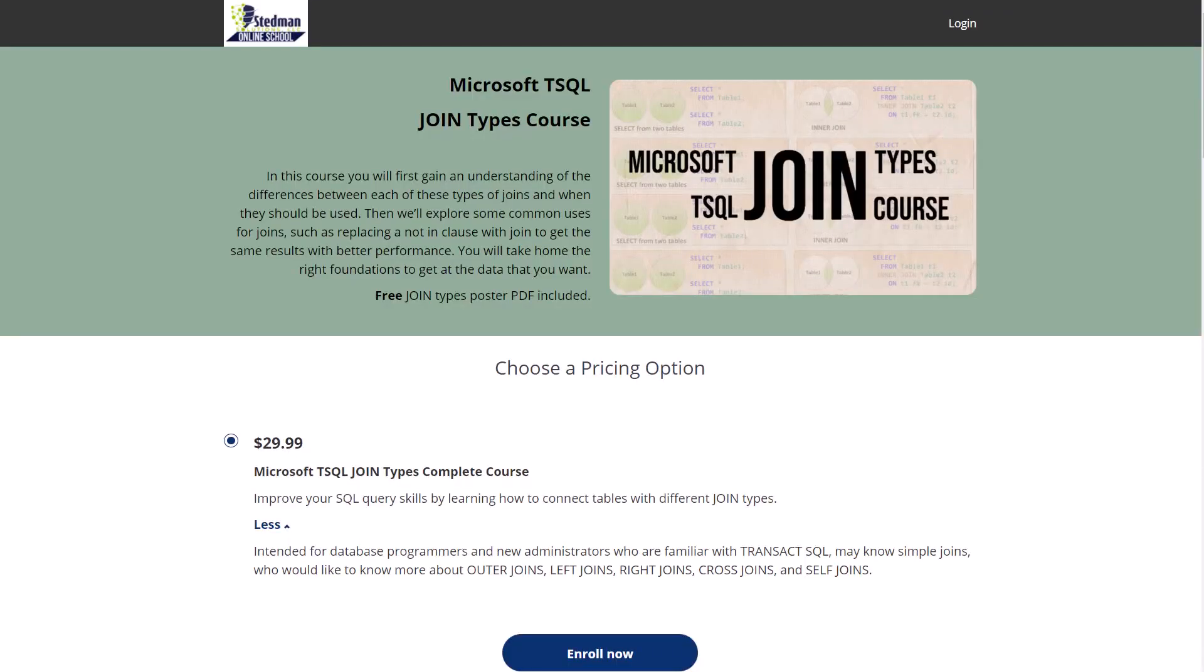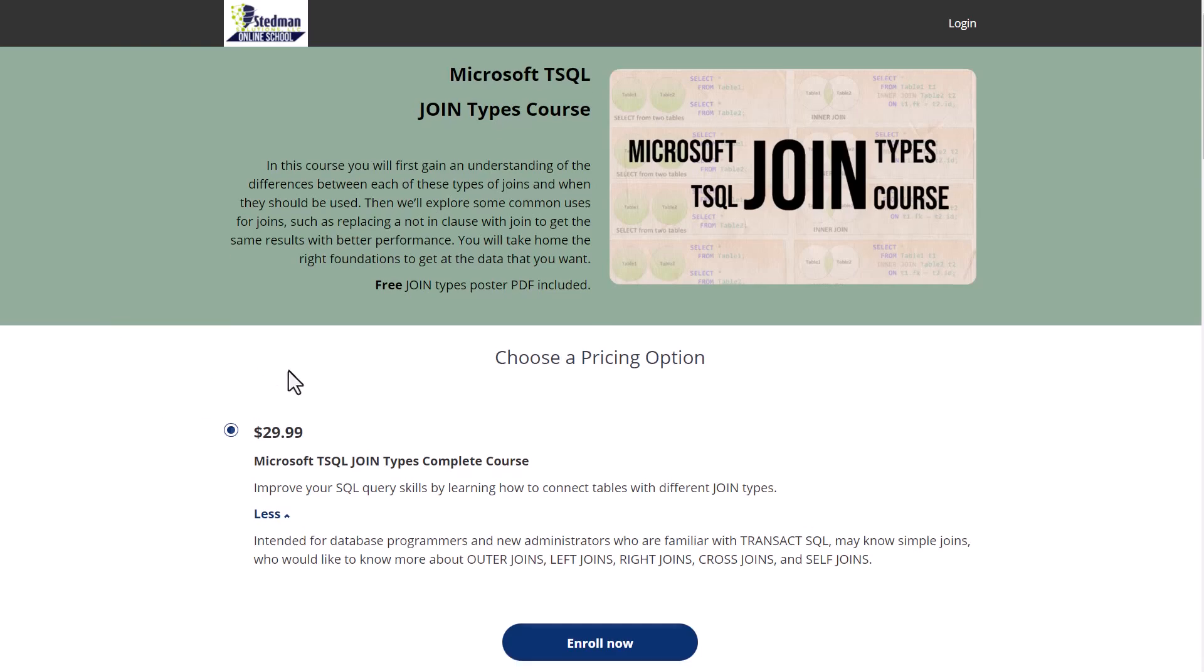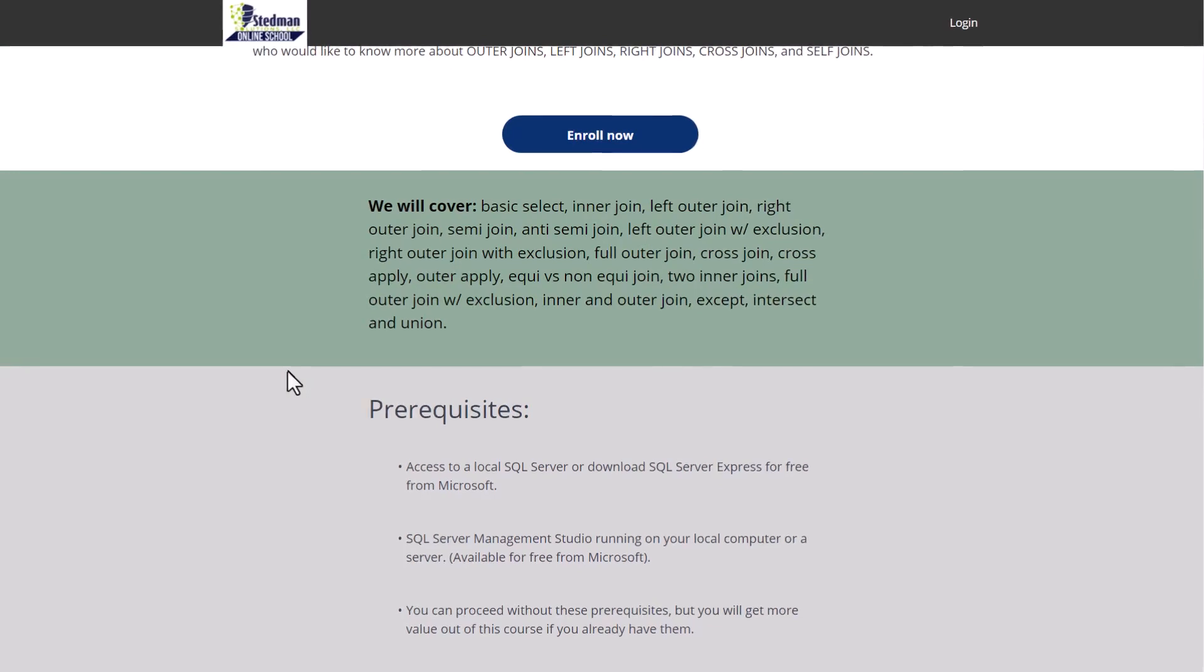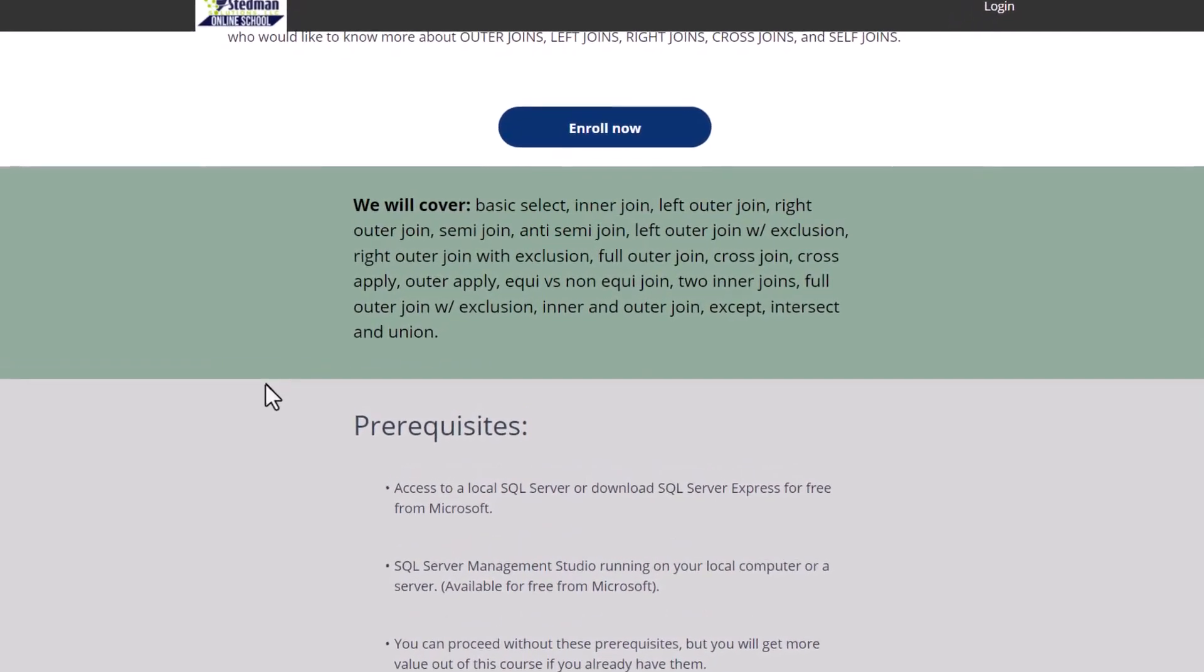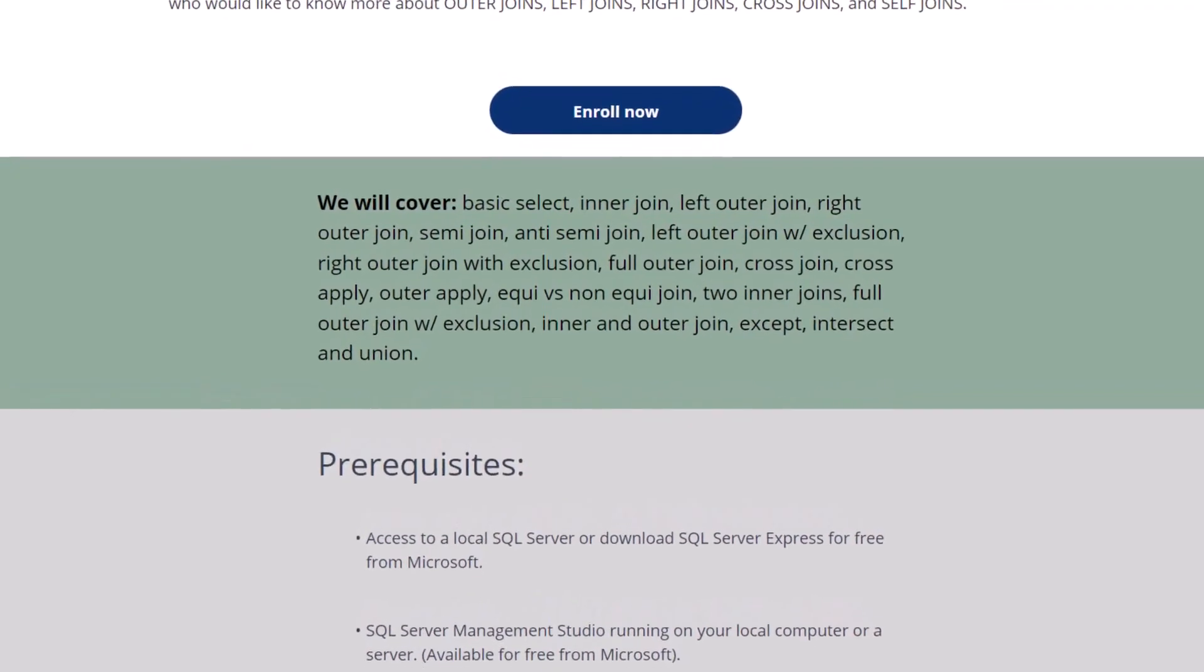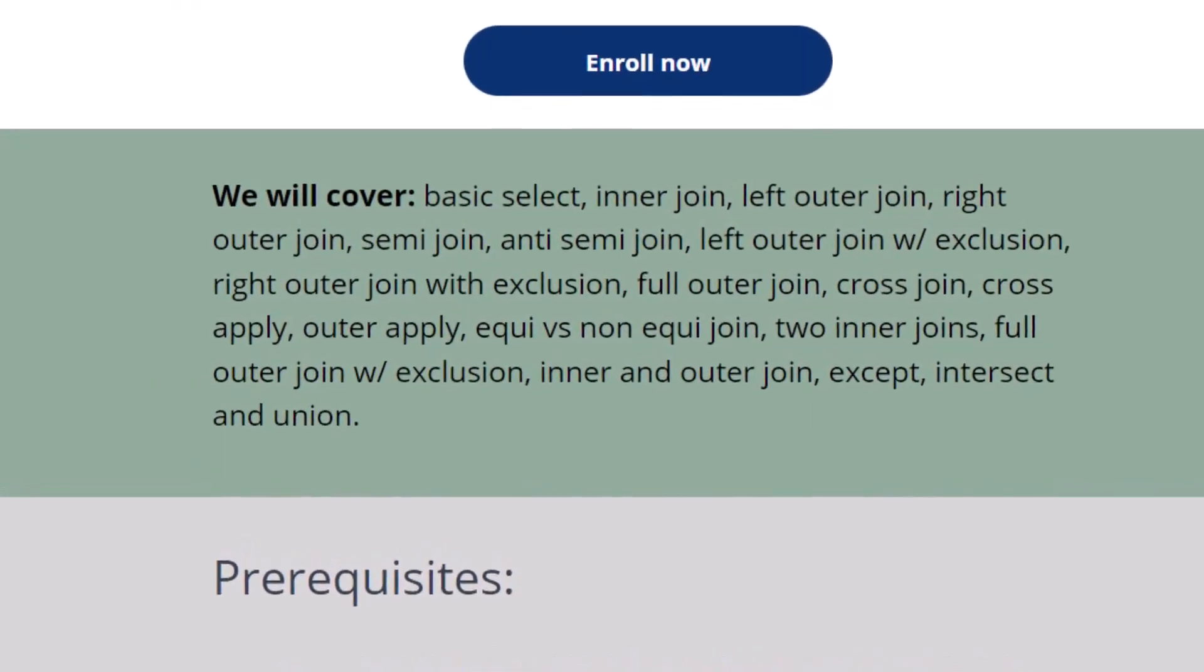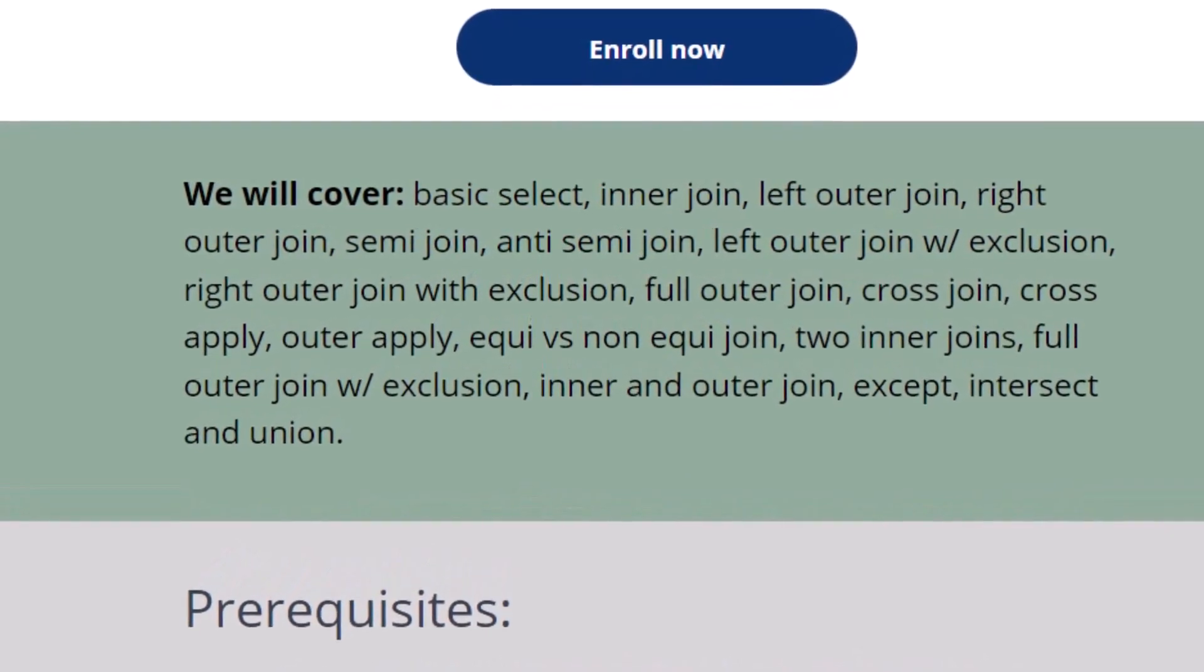Hi, this is Steve Steadman and I just want to let you know the video that you've just finished watching is part of what's offered in my T-SQL join types course. It's available for a low price of $29.99. And with this we're going to cover everything from basic select, inner join, left outer join, right outer join, semi join, anti semi join, left outer join with exclusion, right outer join with exclusion, full outer join, cross join, cross apply, outer apply, and many more.